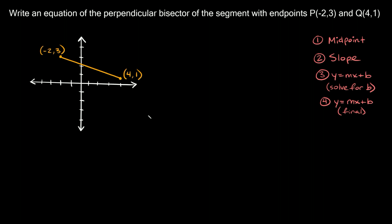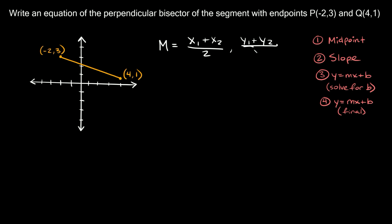You can basically break this problem down into four steps. The first step is finding the midpoint of the segment. To find the midpoint between two points the formula is: x₁ plus x₂ over 2, and y₁ plus y₂ over 2.